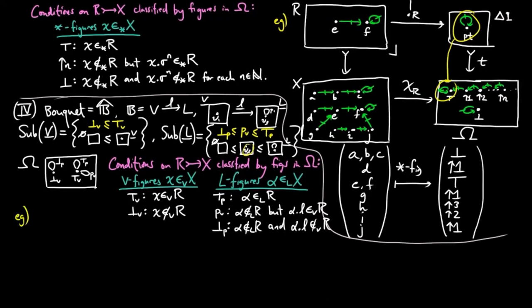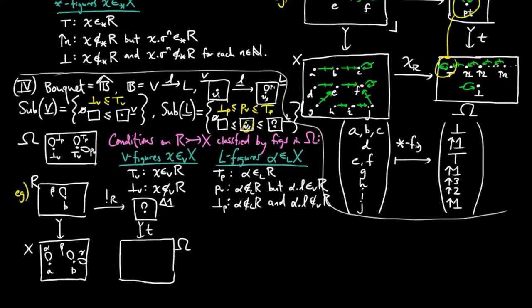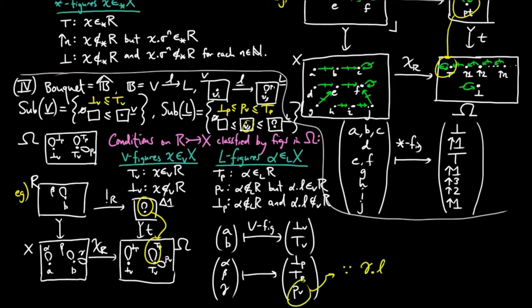For example, if X is a bouquet with vertices a and b and petals alpha, beta, and gamma, and R is a sub-bouquet with vertex b and petal beta, then on v-figures the characteristic morphism takes vertices a and b to the false vertex and true vertex respectively. On petals, alpha, beta, and gamma are taken to the false petal, the true petal, and p_v respectively, since gamma is not a petal of R but its l-boundary is a vertex of R.